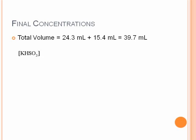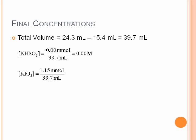Now we need to calculate the concentration of the KHSO3, which will be trivial since that's the limiting reactant and we have none left. So we have a final concentration of zero molar. For the KiO3, what we found was that we had 1.15 millimoles of that divided by 39.7 milliliters for 0.0290 molar as a final concentration.